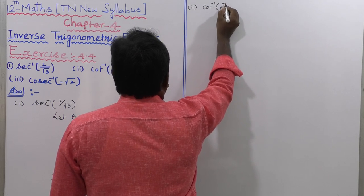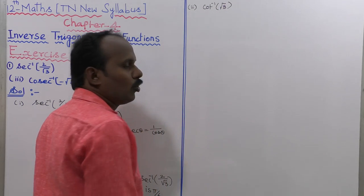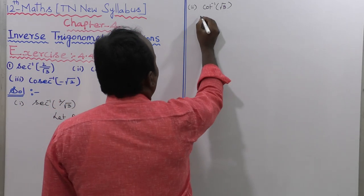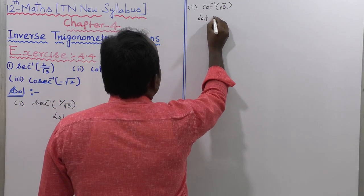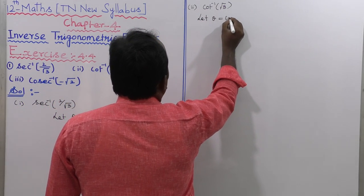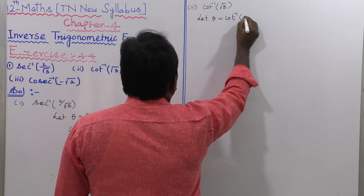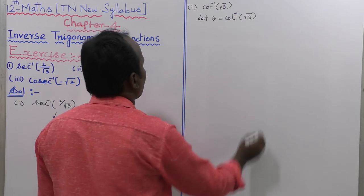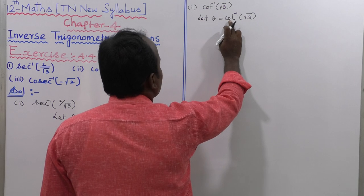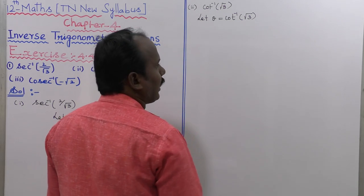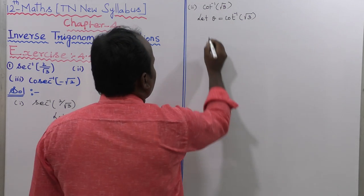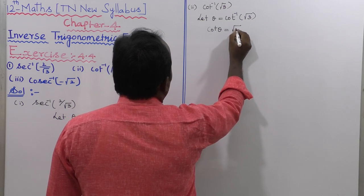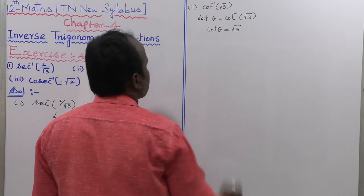Now let us go to the second subdivision: cot inverse of root 3. Let us consider theta equal to cot inverse of root 3. Bringing cot to the left side, cot theta equals root 3.